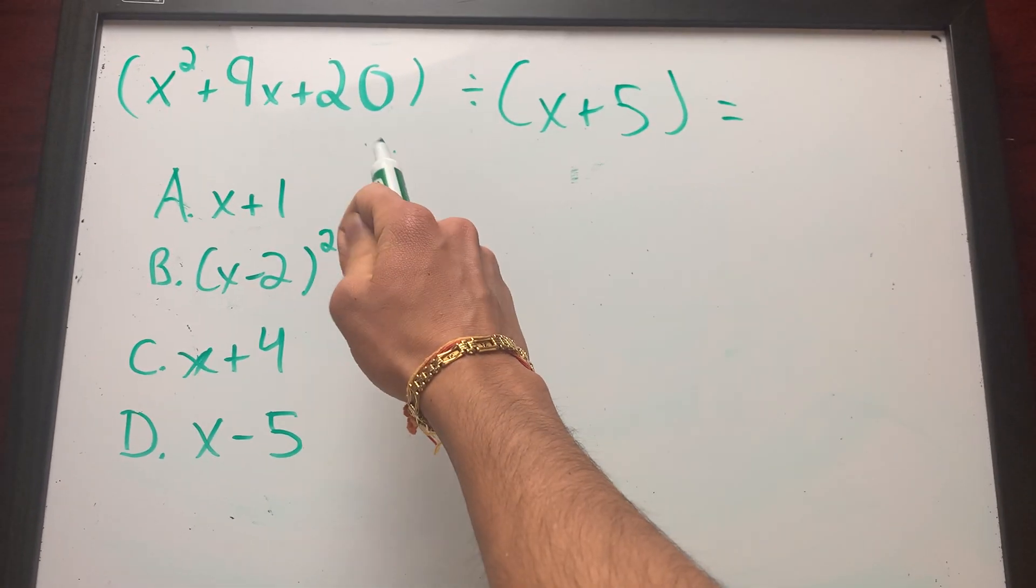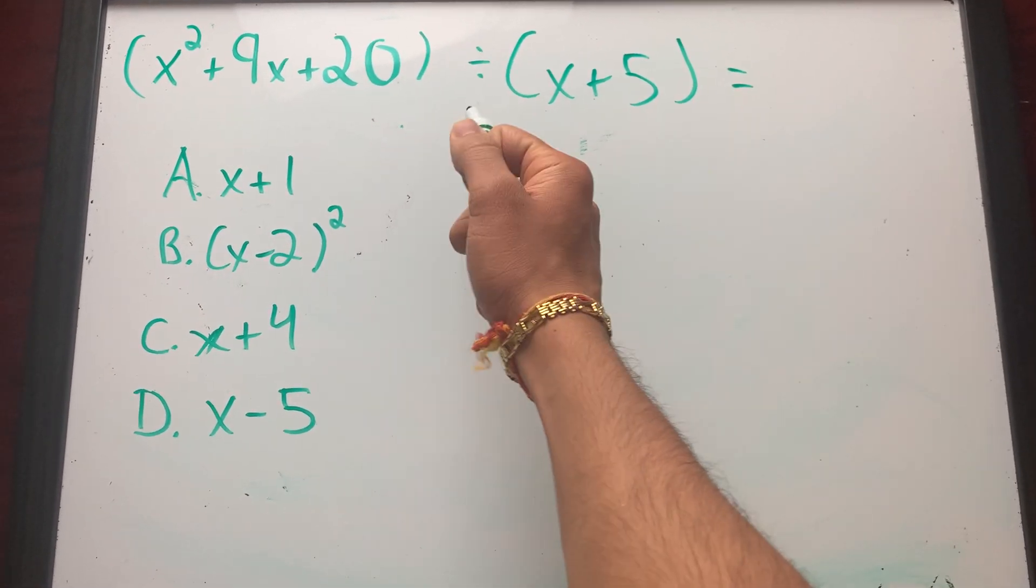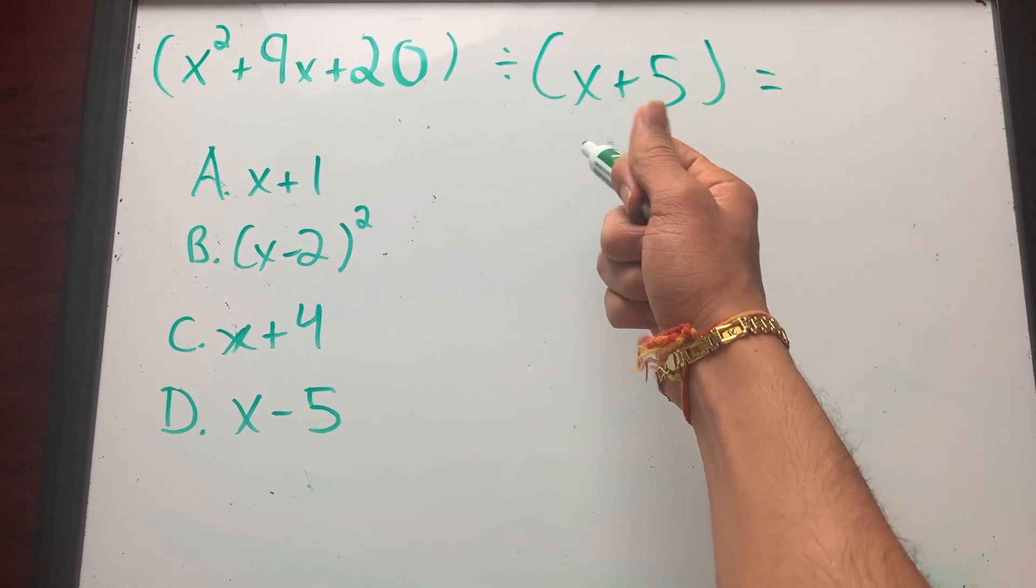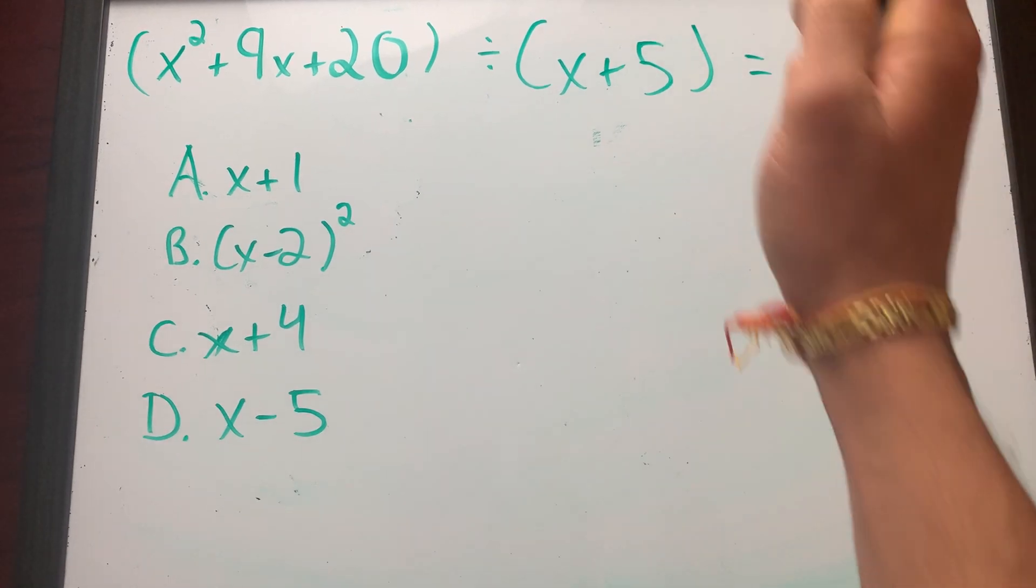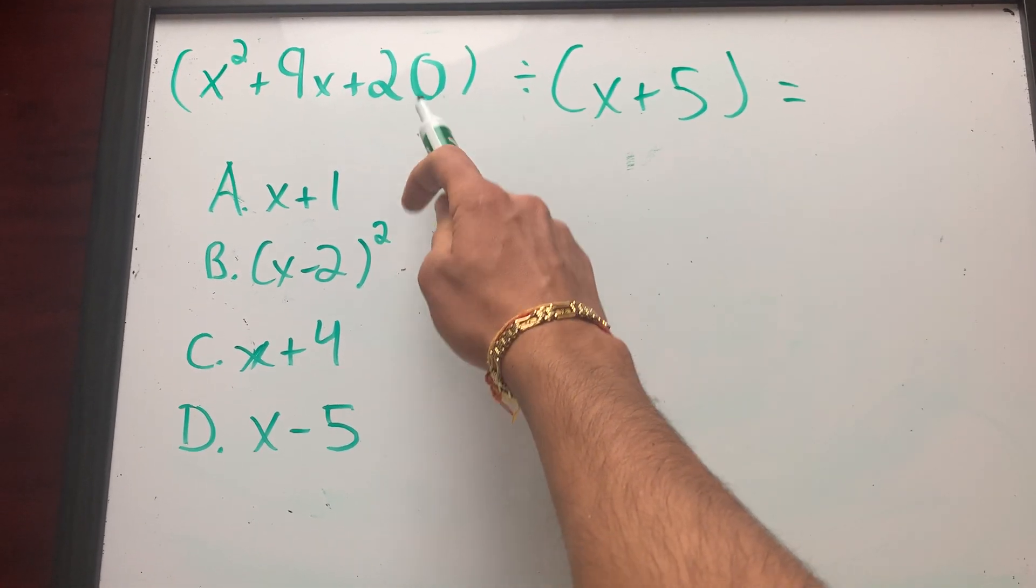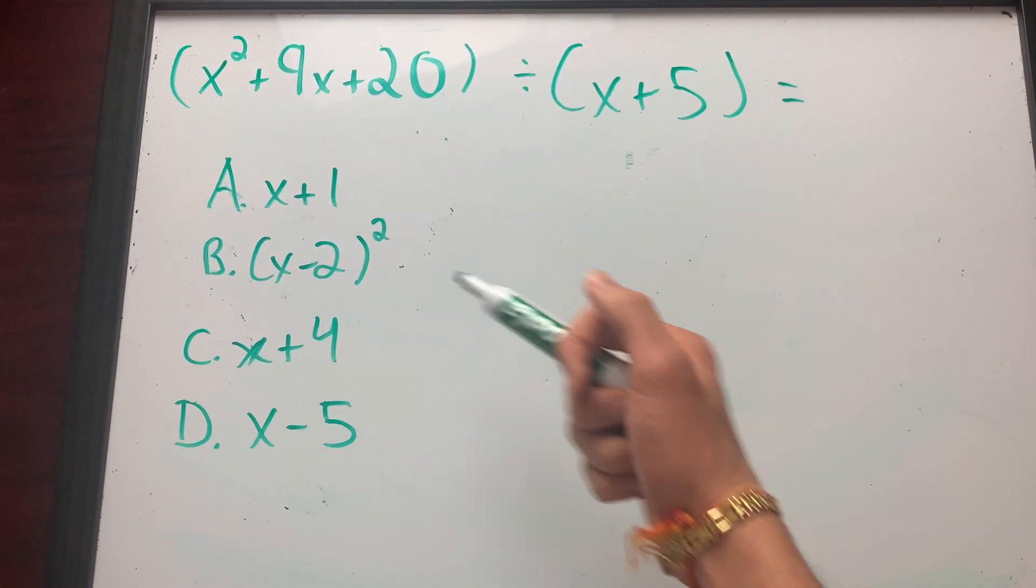So whenever people see this problem, they get really scared and they don't know how to solve this problem. So they just do random stuff and they end up getting the problem wrong. There's a really fast way to solve this problem. So this can be simplified to one of these. Now the question is, which one is the answer?